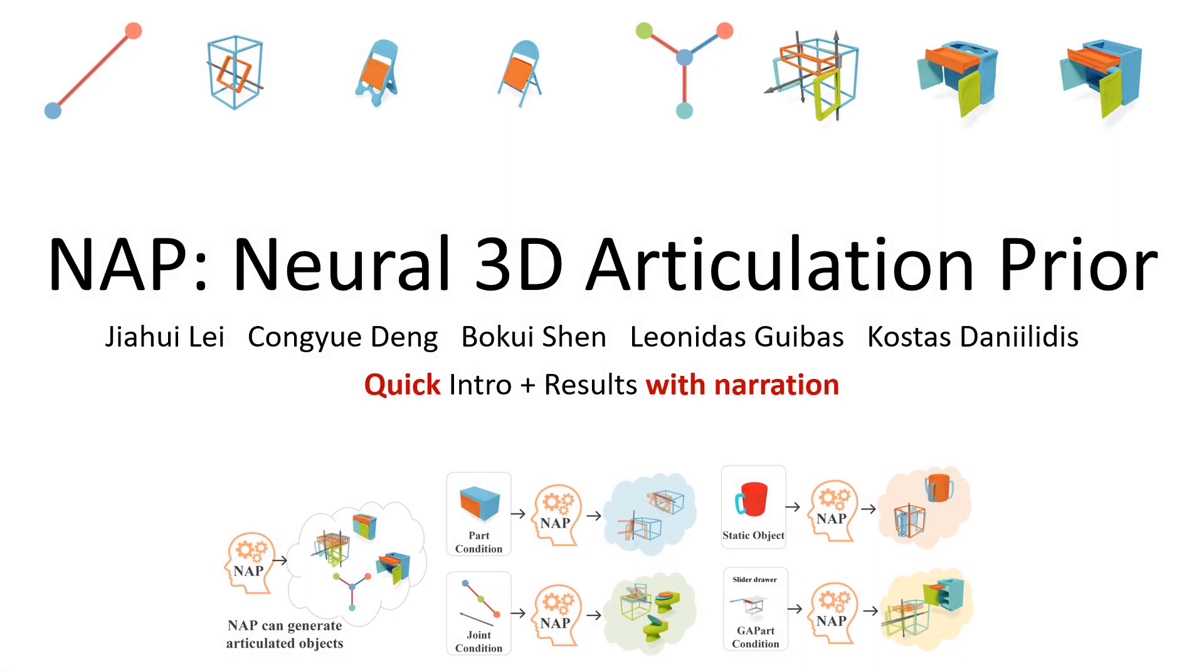We present NAP, Neural 3D Articulation Prior, a deep generative model that can synthesize 3D articulated object models. This supplementary video includes a quick introduction to our paper and visual results.